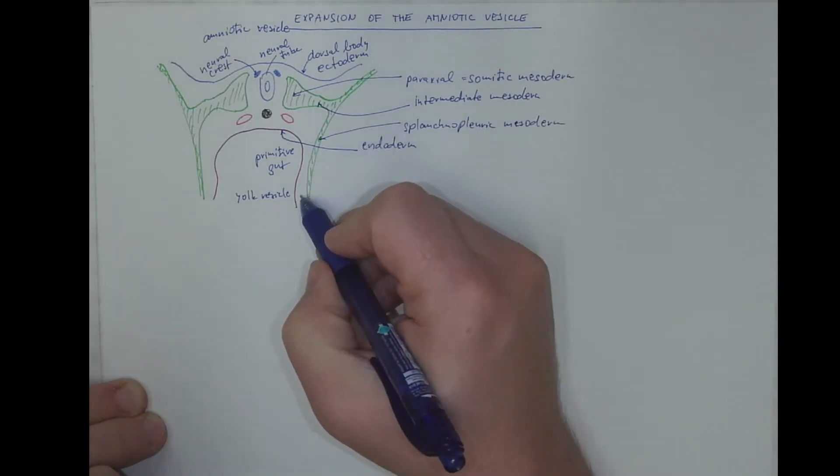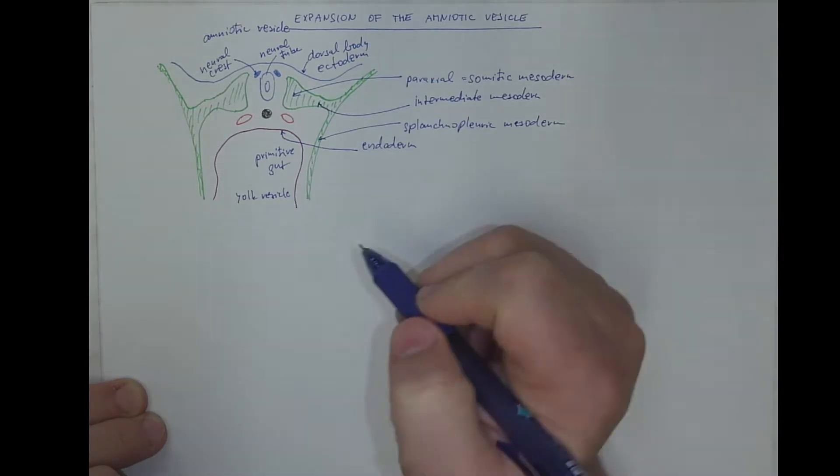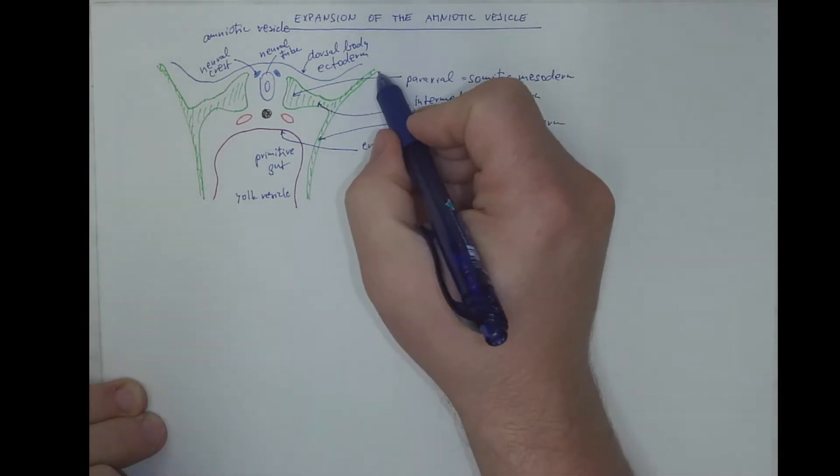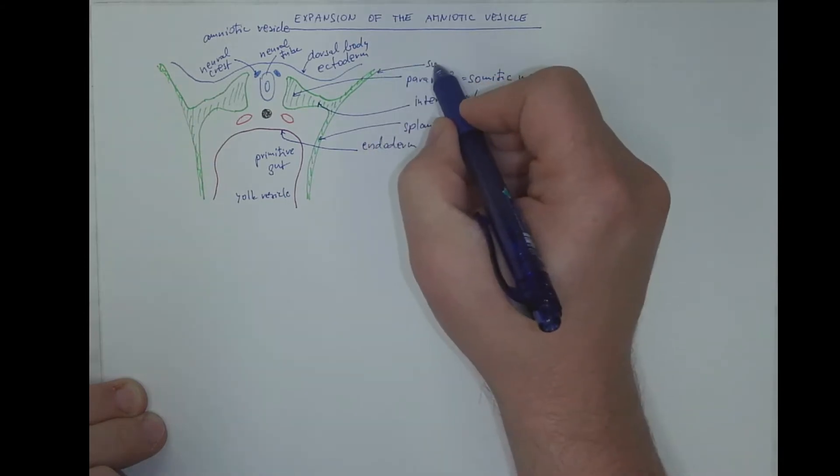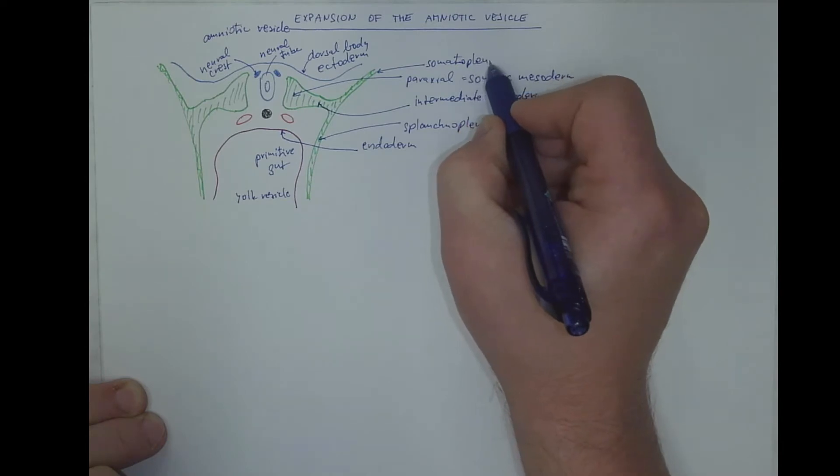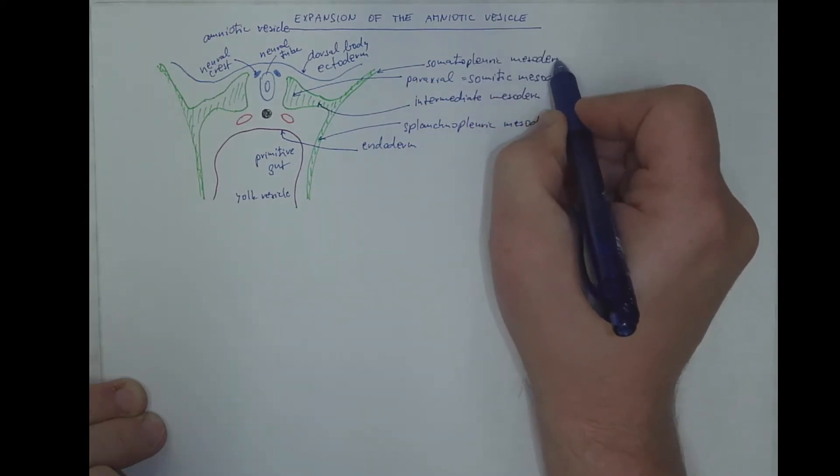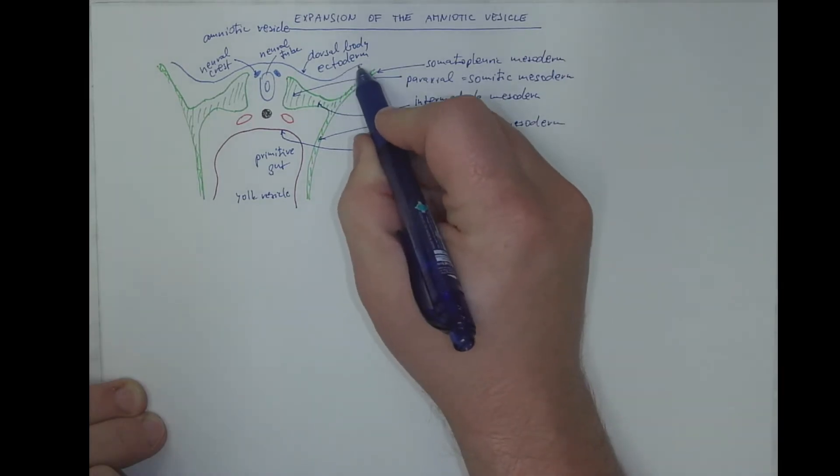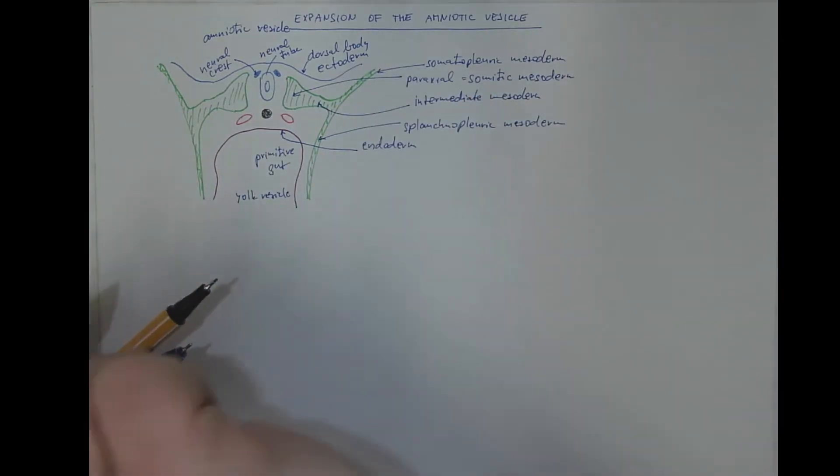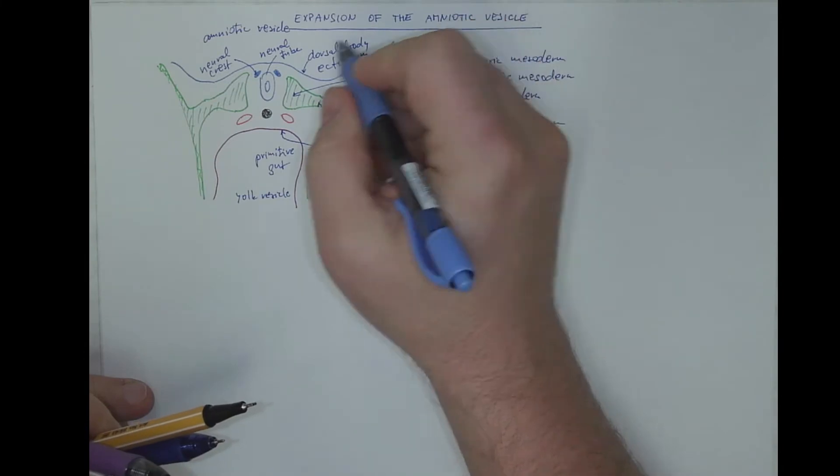That adheres to the wall of the yolk sac, yolk vesicle. And the somatopleuric mesoderm here. That adheres to the wall of the amniotic vesicle.